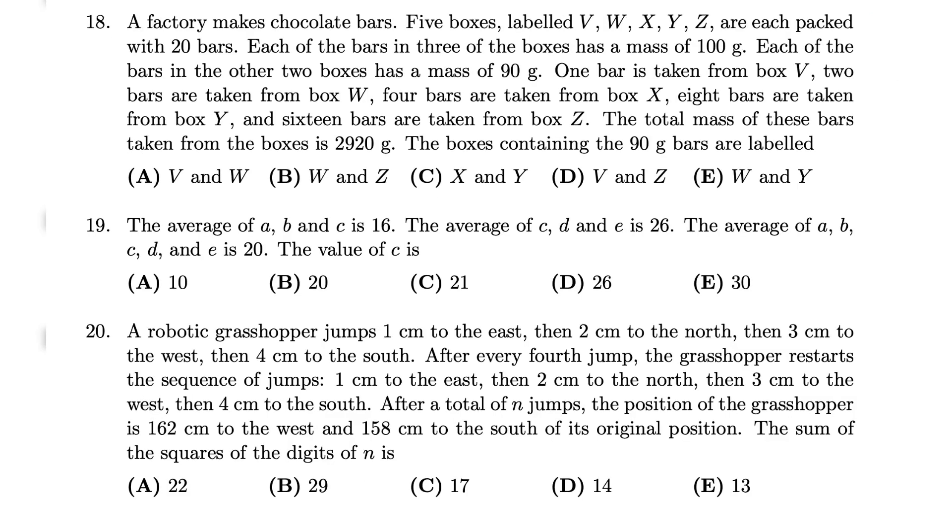Question 18: The number of bars taken from the boxes is 31. If all bars are 100 grams, the total mass would be 3,100 grams. However, the total mass is only 2,920 grams, so 18 bars are 90 grams. Then, you will know the answer is B. Question 19: A plus B plus C is 16 times 3, which is 48. C plus D plus E is 78. A plus B plus C plus D plus E is 100. 48 plus 78, then minus 100, the value of C is 26.